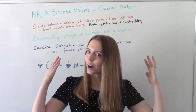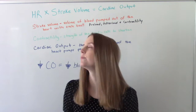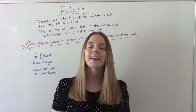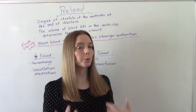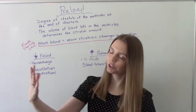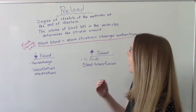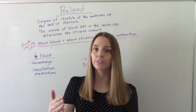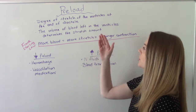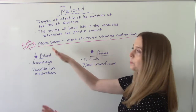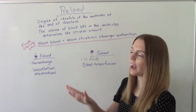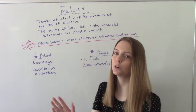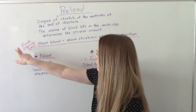Because we want to know cardiac output, we need to better understand stroke volume. So let's talk specifically about preload and then afterload. Preload is the degree of stretch — how much the ventricles have to stretch at the end of diastole. The volume of blood left in there, sometimes called the end diastolic volume, determines the stretch amount. More blood means more stretch is needed, and more stretch means the contraction of the heart is going to have to be stronger to push out that bigger amount of blood. That is called the Frank-Starling Law.